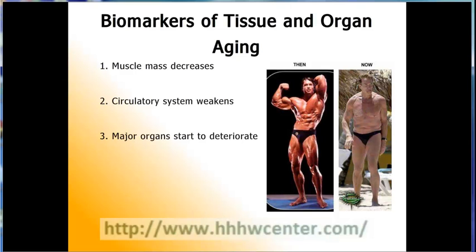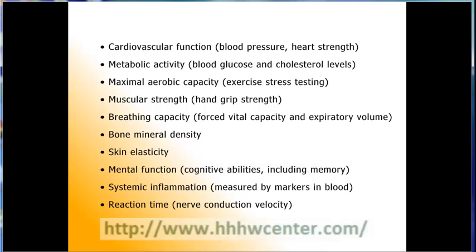Third, major organs start to deteriorate. As time passes, major organs also tend to decrease in their usual functioning levels. One of the organs that deteriorates fastest is the kidneys, which are responsible for cleansing and filtering blood from wastes. As you get older, urinary incontinence can become evident. Some of the more common biomarkers for aging include: cardiovascular function, blood pressure, heart strength, metabolic activity, blood glucose and cholesterol levels, maximal aerobic capacity, exercise stress testing, muscular strength, hand grip strength, breathing capacity, forced vital capacity and expiratory volume, bone mineral density, skin elasticity, mental function, cognitive abilities including memory, systemic inflammation measured by markers in blood, reaction time, and nerve conduction velocity.